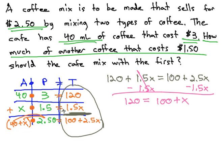Finally, we can subtract the 100 from both sides to get the x alone. This gives us 20 equals x.